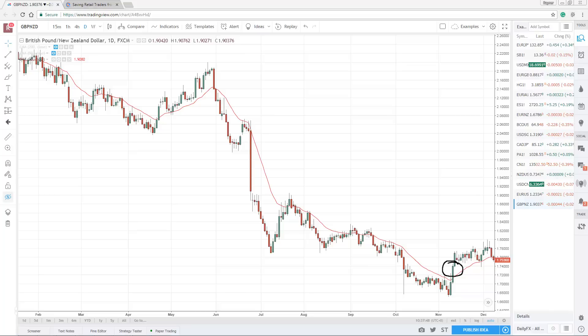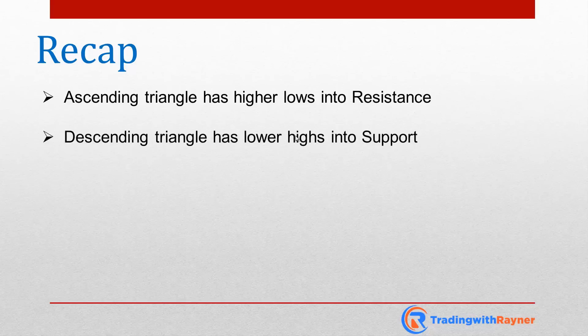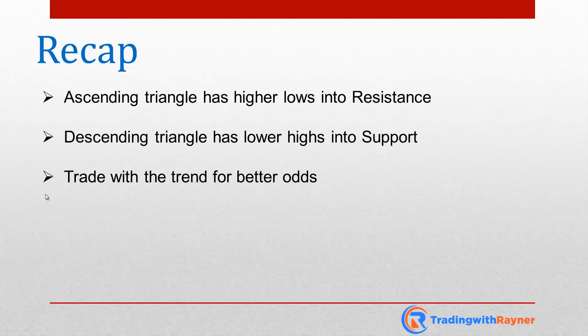This is the ascending and descending triangle pattern. Quick recap: an ascending triangle is higher lows into resistance; a descending triangle is lower highs into support. The reason this pattern works is because there is order flow at the other end of the market structure. For an ascending triangle, traders are putting their stops above resistance — when the market hits those stops, they get triggered, and on top of that you have breakout traders looking to go long. These two groups create huge buying pressure leading to higher prices. If you want to trade this pattern, trade with the trend for better odds — the trend is your friend.